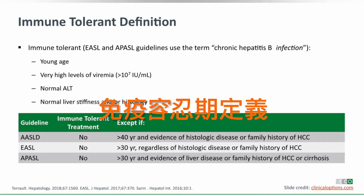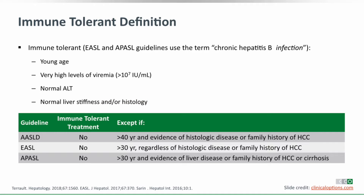All of the guidelines — AASLD, EASL, and APASL — are consistent in saying you should not treat this patient. They do have some exceptions related to three factors. One is age: AASLD says at 40 years and older, look carefully for a reason to treat; EASL and APASL use 30 as the cutoff. As patients get into the 30-to-40 age range, consider whether they may no longer be immune-tolerant and need treatment.